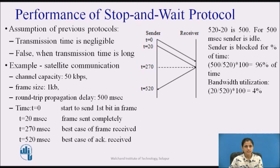Under the best circumstances with a 500 ms round trip propagation delay, a frame takes 250 ms to reach the receiver. At t = 20 ms the frame has been completely sent and requires 250 ms to reach the receiver, so the total time needed is 20 + 250 ms, that is t = 270 ms. Consider the frame has fully arrived at the receiver. At t = 520 ms, the acknowledgement arrives back at the sender.